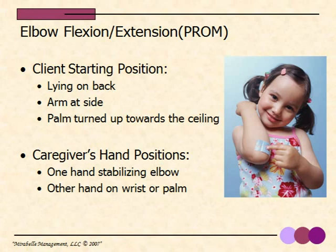The next stretch is elbow flexion and extension. This is important to assist with feeding and also helps with getting people dressed. Once again, the client is lying on their back, their arm is at their side, and their palm is turned up towards the ceiling. The palm position is very important — it minimizes the amount of pinch that could occur in the elbow joint. One hand needs to go onto the elbow to stabilize it, and the second hand goes on the client's palm or wrist.